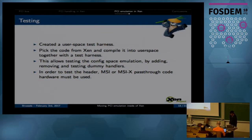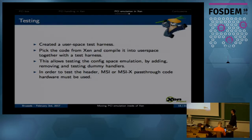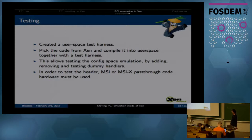In order to test this, it's not easy to test things when code runs inside the hypervisor, because every time you make a change you have to reboot your system. So we decided to create what we call a user-space test harness. Basically we pick the code from the Xen hypervisor, place it in user space, and compile it together with a small application that contains some tests. This allows us to test the logical functionality - like adding registers, removing registers. But it doesn't allow you to test specific implementations like MSI emulation or MSI-X emulation because those require real hardware.